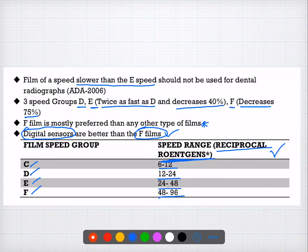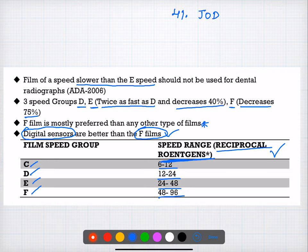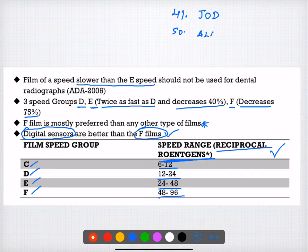Question forty-nine: the three guidelines in radiation protection can be remembered with the word JOD — J for justification, O for optimization, D for dose limitation. Question fifty: ALARA stands for 'as low as reasonably achievable.' So I'm done for today's paper. This paper covers radiation physics, radiation biology, and principles of geometry. Thank you.